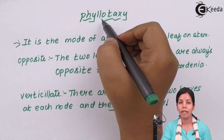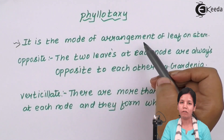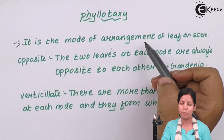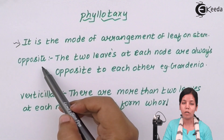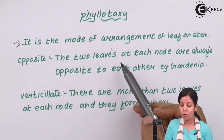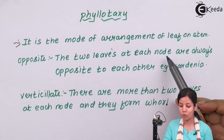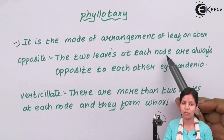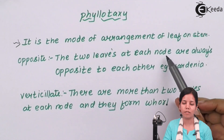Phyllotaxy is nothing but the arrangement of leaves on the stem. In opposite Phyllotaxy, two leaves are at each node, always opposite to each other — you can say they are always at right angles to each other.